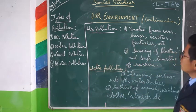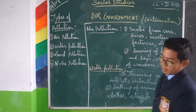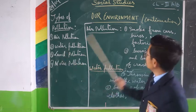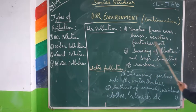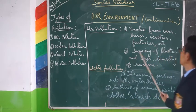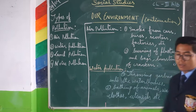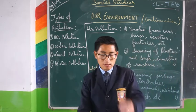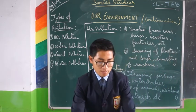The first type is air pollution. Smokes from cars, buses, scooters, factories, and so on lead to air pollution. Burning of plastics and bags also leads to air pollution. Bursting of crackers — for example during Dasara, Diwali, and Christmas week — also leads to air pollution.